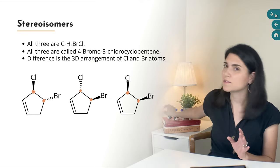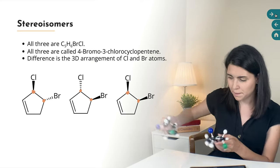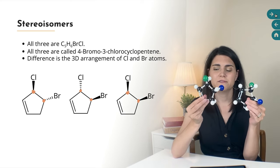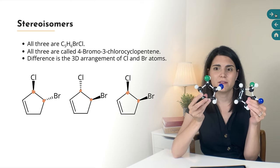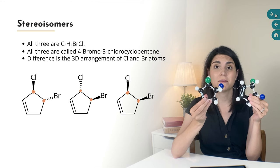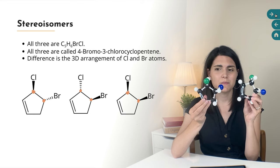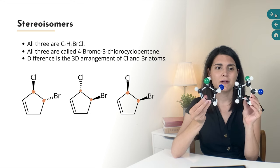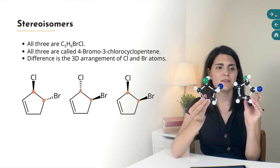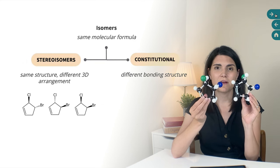I've built models of the first two of those here so you can see. In this first one, you've got the double bond over here on this side. The chlorine is pointing towards you and the bromine is pointing towards me and away from you. And then in the second one, you have the double bond on the same side, but the chlorine is pointing towards me and away from you, and the bromine is pointing towards you and away from me. So these are stereoisomers of one another.